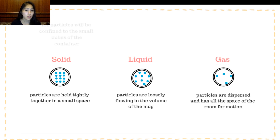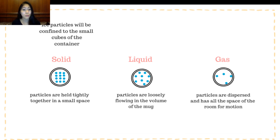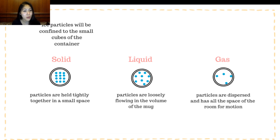So what does it mean when particles are held tightly together in a small space? The ice cubes are confined to the cubes of the container. So if you happen to have an ice cube container that could make star-shaped ice, then your ice is going to come out star-shaped. It's not going to come out round and it's not going to come out square. So the particles are held together in that small space and confined to that.